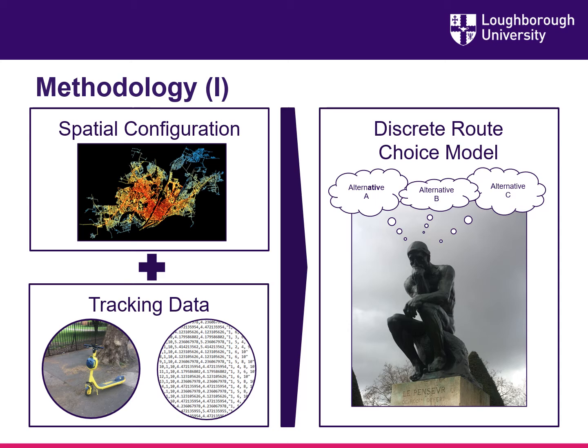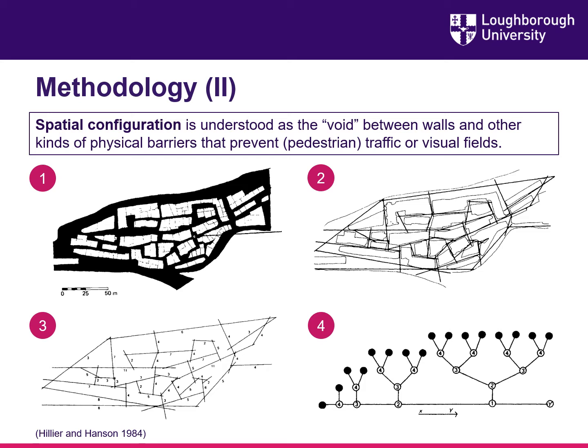For developing the route choice model we use a theoretical framework of discrete choice modeling. Parameters derived from spatial configuration analysis serve as input attributes, and tracking data from micromobility services are used for calibration and verification purposes.